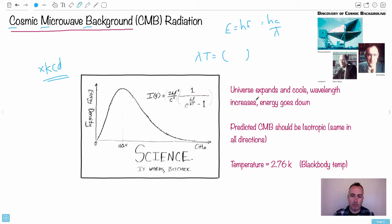So it says, the universe expands and cools, the wavelength increases, so the energy goes down. Predicted CMB should be isotropic. And what does that mean? It means, no matter which direction you look, it should be the same. It should also be homogenous. Homogenous means literally the same. Homogenous, it should be isotropic, and it should have a peak wavelength of 2.76 Kelvin.